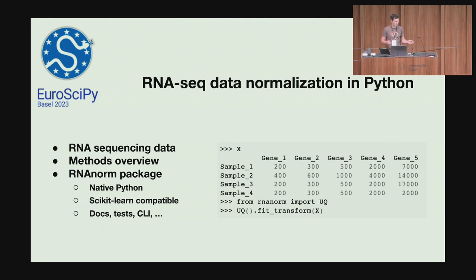We overview these methods and suggest which one works best in our experience. But we don't stop there — we provide a tool, the RNA-norm Python package, which implements all of the most common methods, written in Python. All these methods are designed to be scikit-learn compatible, so you can put them as transformers into a pipeline and actually evaluate your model's performance based on the normalization you choose. Stop by, and we can have a chat. Thank you.